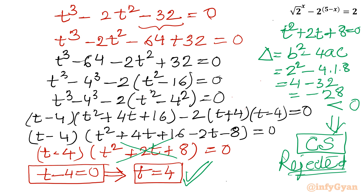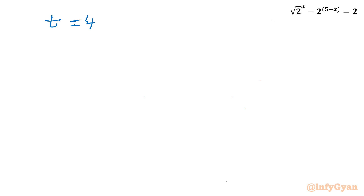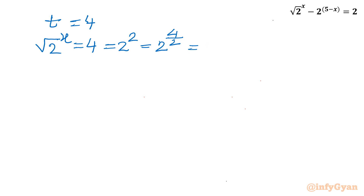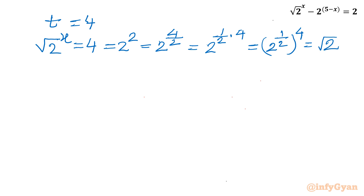So t equals 4, and since t was root 2 to the power x, we have root 2 to the power x equals 4. Without using logarithm, 4 can be written as 2 squared, and splitting the power: 2 to the power 1 over 2, whole to the power 4, gives root 2 to the power 4. Comparing both sides, x equals 4, which is our real solution.